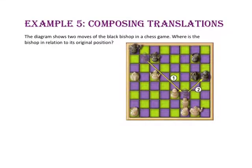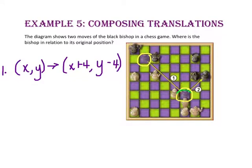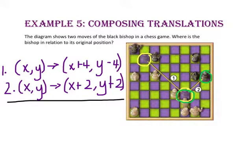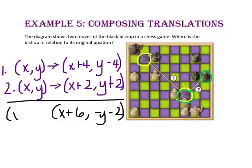In example 5, we will compose translations. The diagram shows two moves of a black bishop in a chess game. Where is the bishop in relation to its original position? Starting from the first move, we make a move of 4 units to the right and 4 units down. In our second move, we move 2 units to the right and 2 units up. We can add our compositions: 4 plus 2 gives us 6, and negative 4 plus 2 gives us negative 2. So we have: (X, Y) maps onto (X plus 6, Y minus 2).